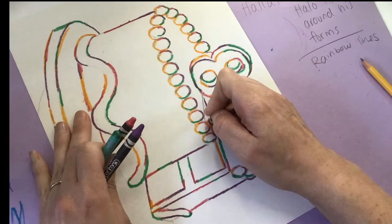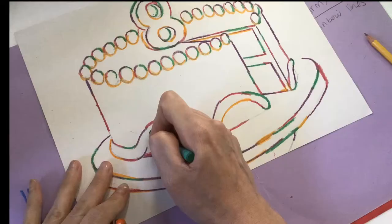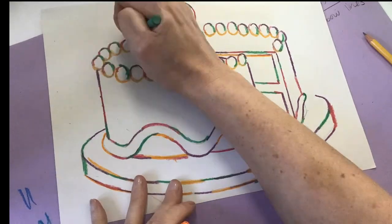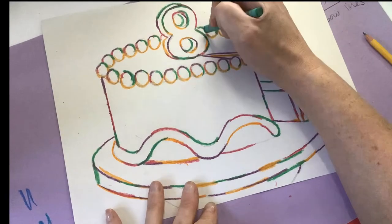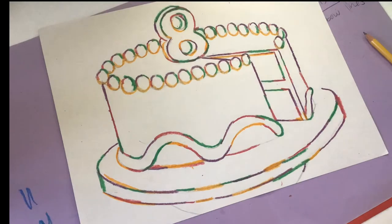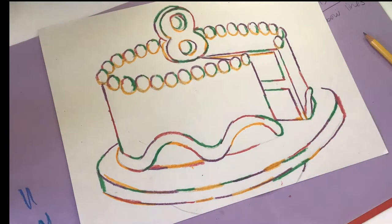Be sure to take your time outlining and try to stay right on your pencil lines. Once you finish all of your colorful outlines, if you feel like your cake needs a few more details, you can always add a couple more details in too.